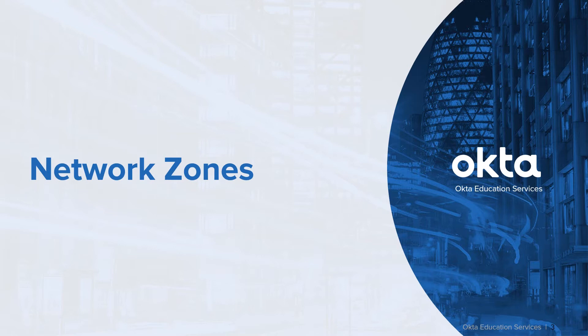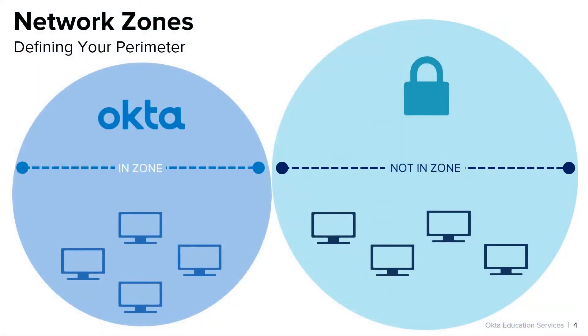This is huge, as it blocks the request from the Okta router level — meaning the requests, perhaps even several thousands of requests as is the case in a denial of service attack, would never make it to your Okta org's gateway. Simply speaking, network zones allow you to define your secure perimeter by monitoring from where or how incoming traffic is attempting to make calls to the Okta API.